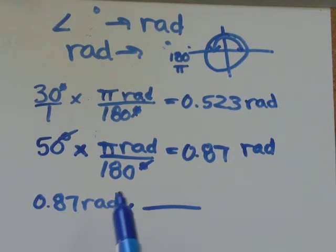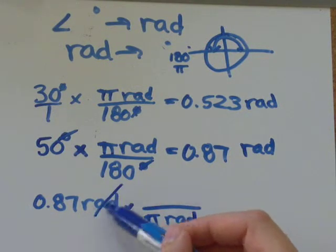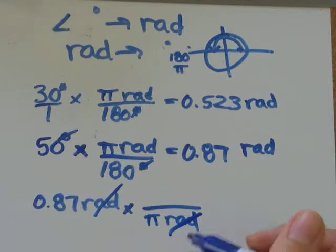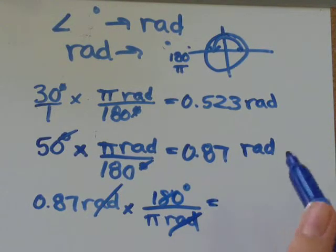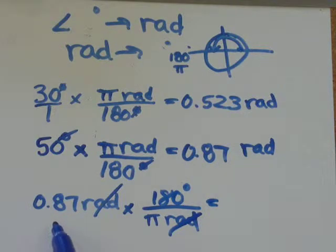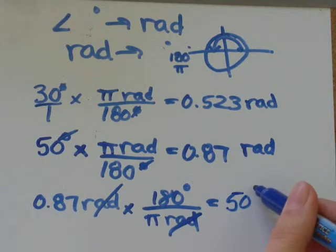This time, I need the radians to cancel out, not the degrees. So I'll put my pi radians on the bottom so that my units cancel out, and I'll put my 180 degrees on the top. I go 0.87 times 180 divided by pi equals, I get 50, and the unit is degrees.